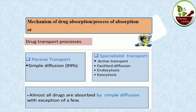The processes of absorption include passive transport and specialized transport. Under passive transport is simple diffusion. Under specialized transport are active transport, facilitated diffusion, endocytosis, and exocytosis. These are the methods by which drugs reach from the site of administration to the systemic circulation. Almost all drugs — 99% — are absorbed by simple diffusion.